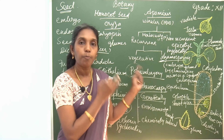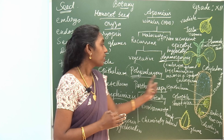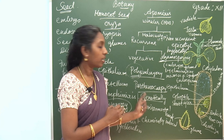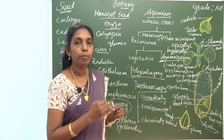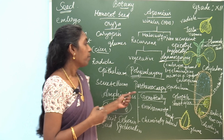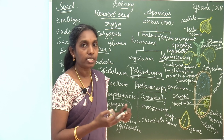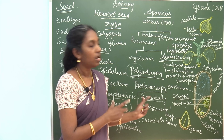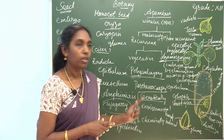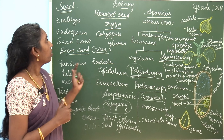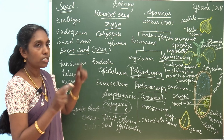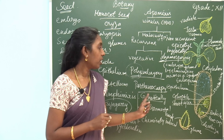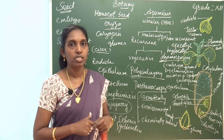The significance of parthenocarpy: parthenocarpy fruits have an absence of seed, so they are significant in horticulture and are of great commercial importance. They are also used for preparation of jams, jellies, sauces, and fruit juices. The edible content is more because of the absence of seed. Today you learnt about seed structure — dicot seed and monocot seed — and a few topics: apomixis, polyembryony, and parthenocarpy.